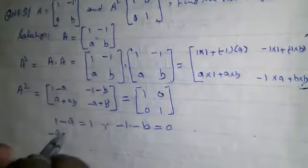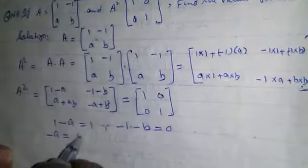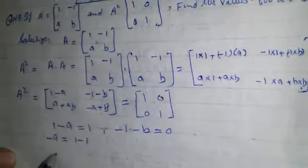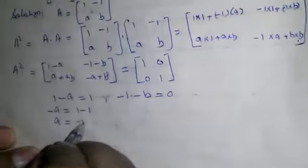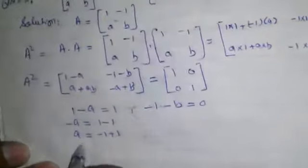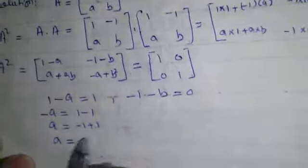Minus a is equal to 1 minus 1, so a is equal to minus 1 plus 1. A is equal to 0.